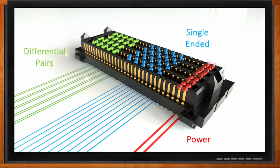An additional feature of C-Ray and our open pin field arrays is that any one pin can perform as a high-speed differential pair, a single-ended signal, or deliver a fair amount of current or power. That flexibility within the interconnect allows Samtech to work with an AI chipset vendor to optimize the pinout and the performance of high-speed signals, differential pairs, and power through the interconnect.